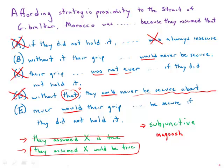Answer choice E says 'never would their grip be secure if they did not hold it.' First, we have no idea what 'it' is referring to — Algeria or Morocco? And 'never would their grip be secure' is an incredibly awkward, wordy, indirect construction. That leaves us with answer choice B, which is direct, unambiguous, and perfectly clear — a sleek, elegant answer and by far the best choice.